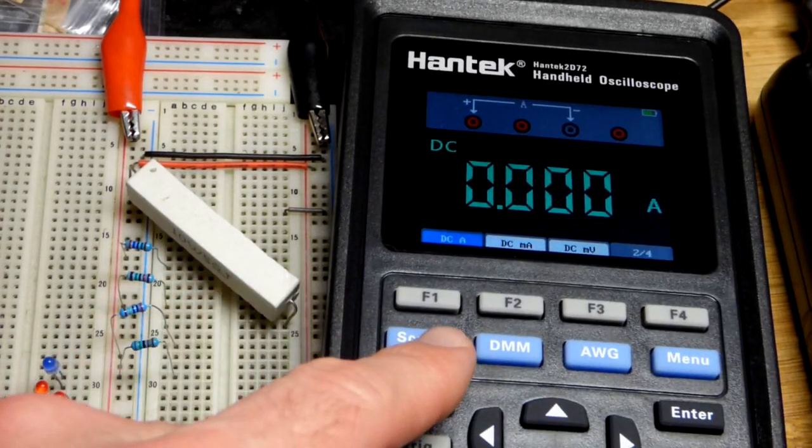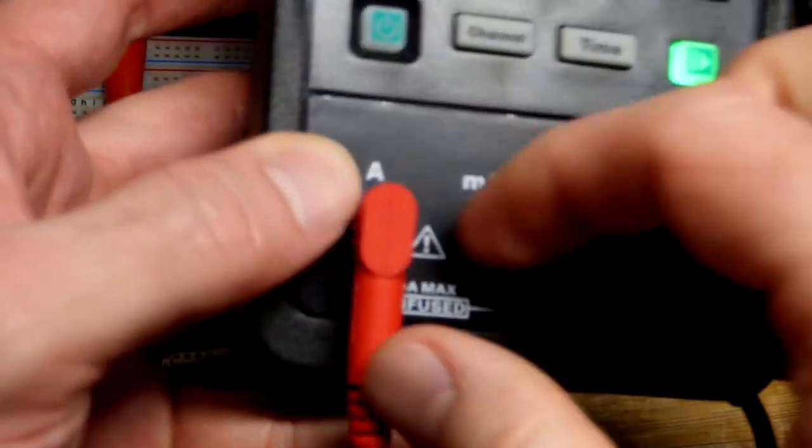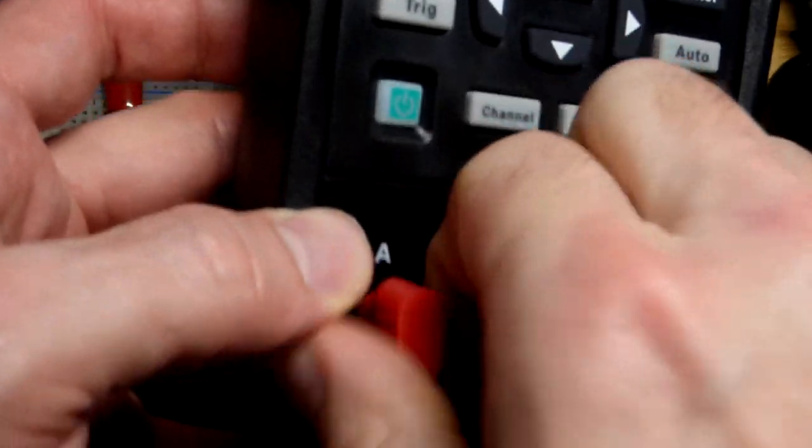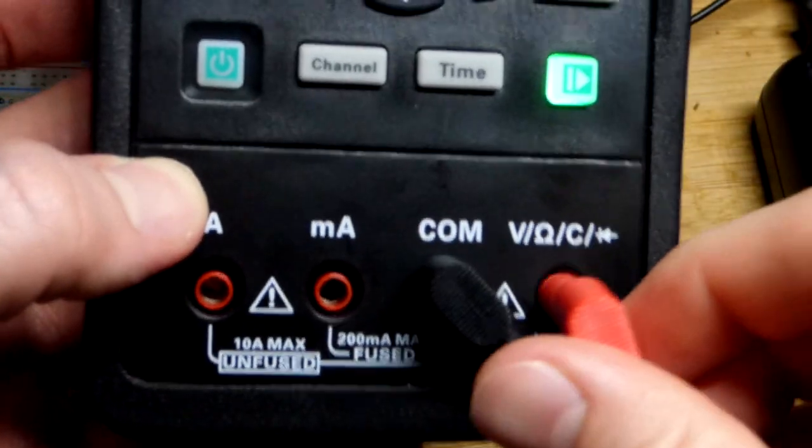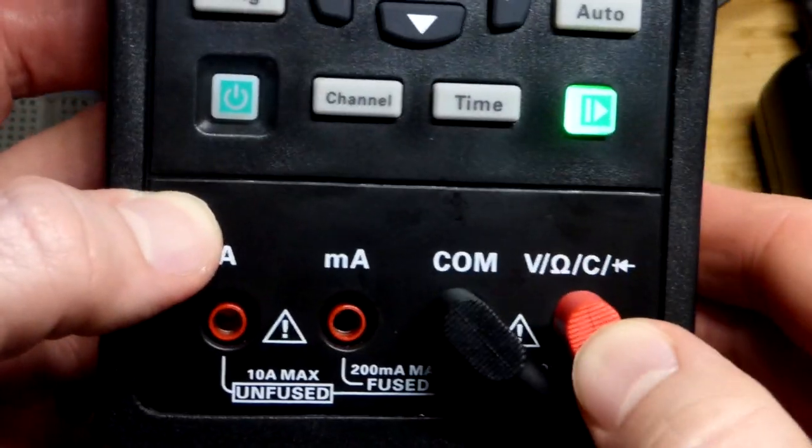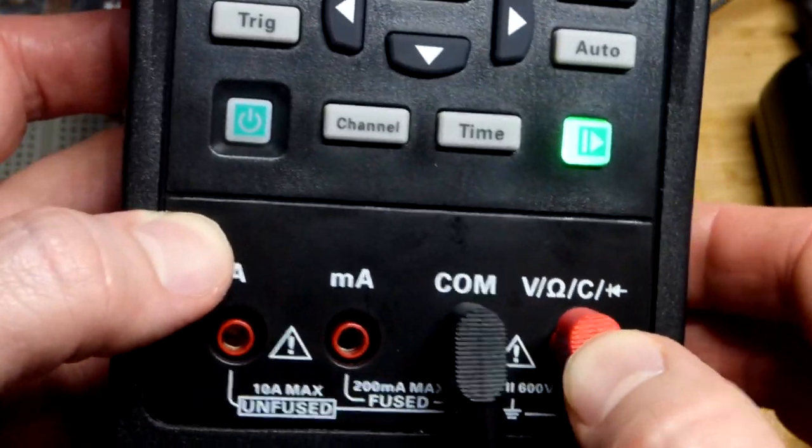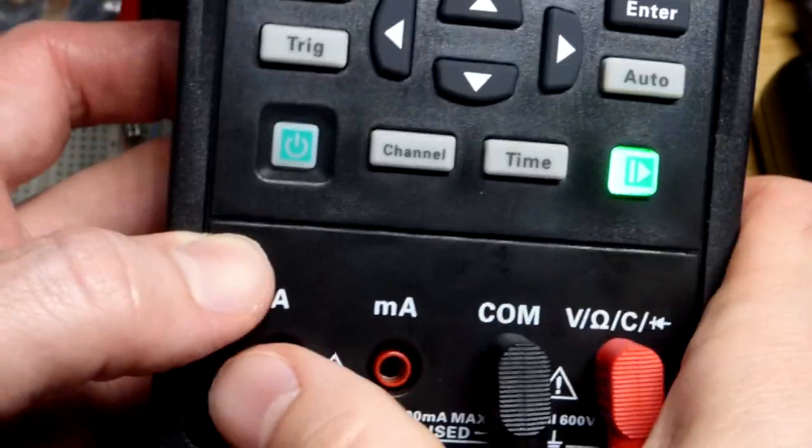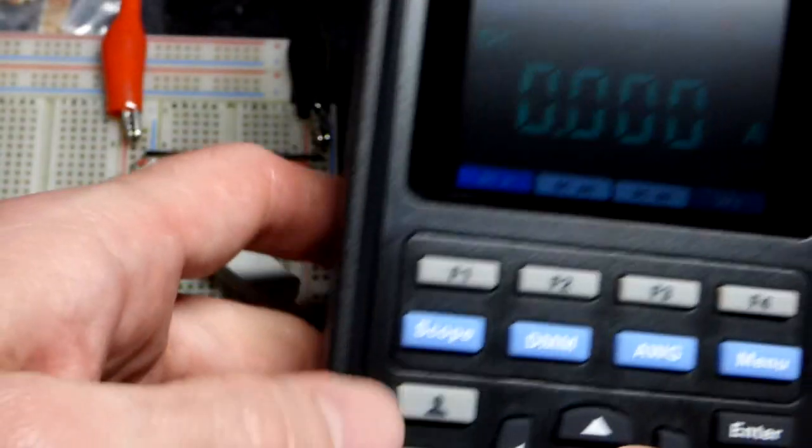But we want to do a couple of things. First let's get the probe out of amps. And this is the safest one where it measures voltages and resistance and stuff. It's best to get it out of measuring current as soon as you're done measuring current.